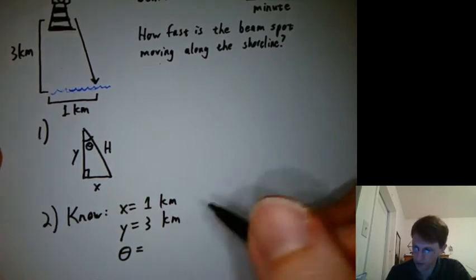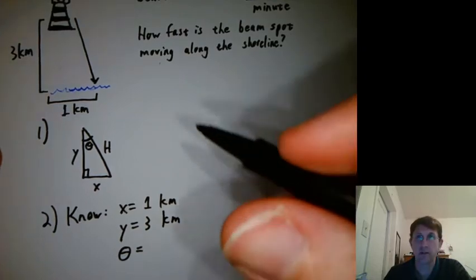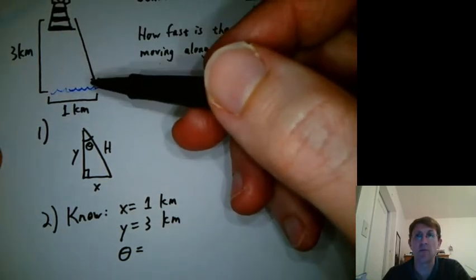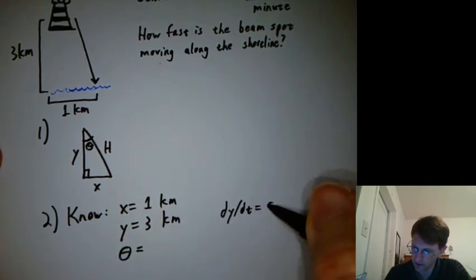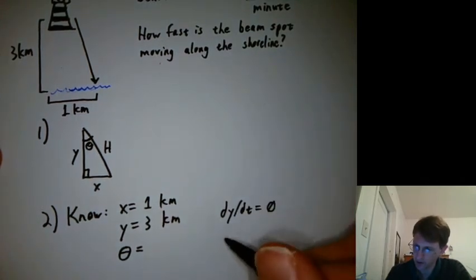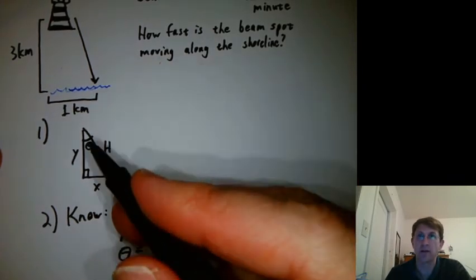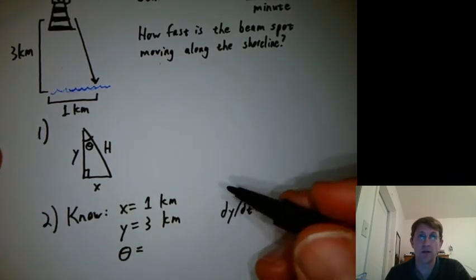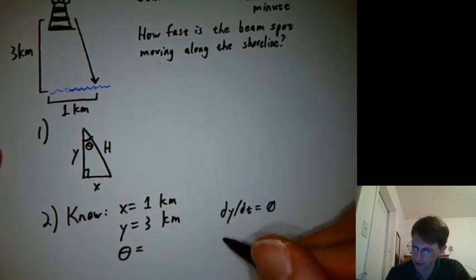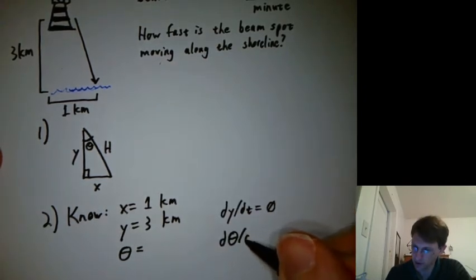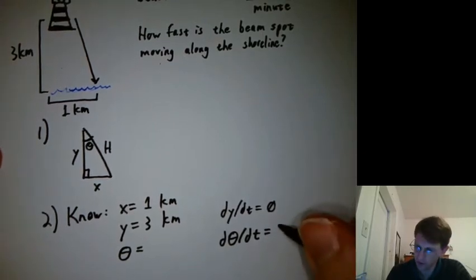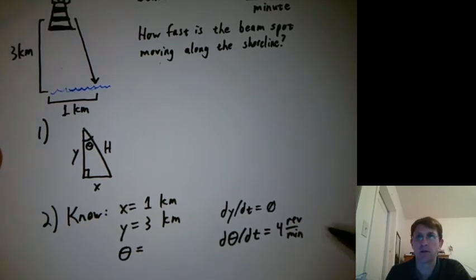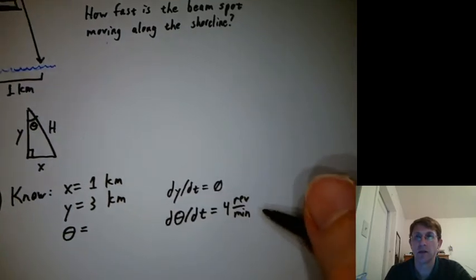What else do we know? Well, how fast is the lighthouse moving away from the shore? Probably not very fast at all. So I'd say dy/dt equals zero. Do we know theta prime? Do we know how fast theta is changing? Well, we do know how fast the lighthouse thing is revolving. So we know d(theta)/dt. Well, we know it's four revolutions per minute, but usually we would like to know that in terms of radians. So what can we do there?